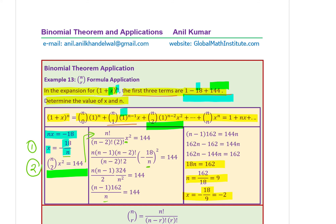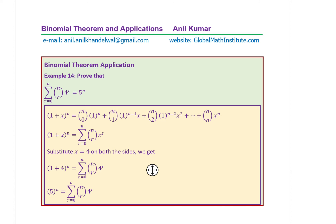Example 14: prove that sigma (r from 0 to N) of nCr · 4^r = 5^N. Start with the known expansion of (1+x)^N. Substitute x=4 on both sides: the left side gives (1+4)^N = 5^N, and the right side gives the sigma expansion with 4^r. That proves the identity. The key strategy is to identify what value to substitute for x.